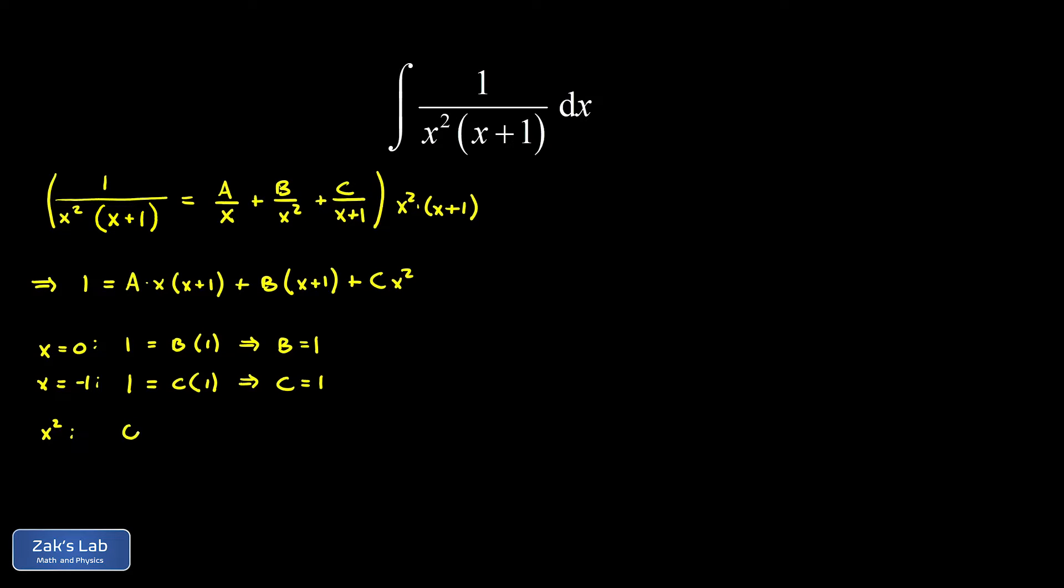On the left side, the coefficient of x squared is 0 because there's no x squareds over there. On the right side, we have an ax squared when we distribute, plus a cx squared. This means that a plus c must equal 0. With c equals 1, we immediately find that a equals negative 1.